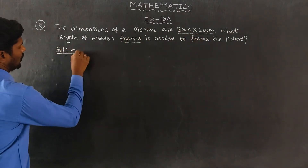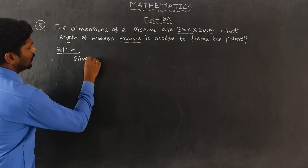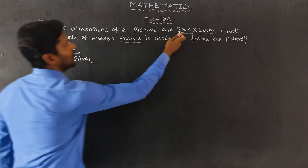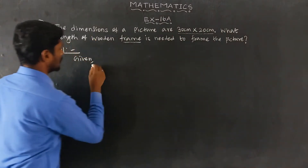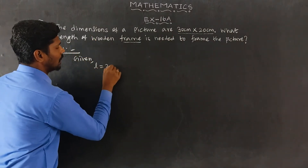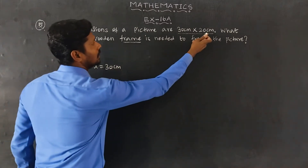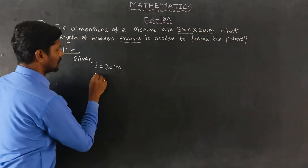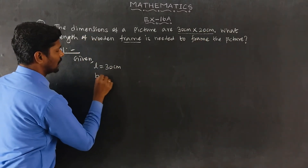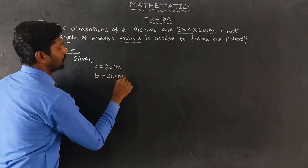Solution given. The first value is the length: L is equal to 30cm. And 20cm is the breadth: B is equal to 20cm.